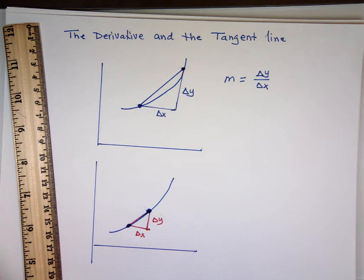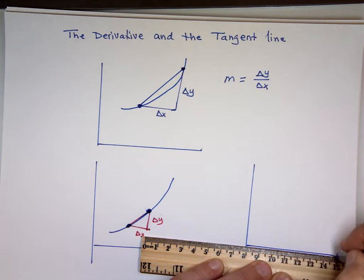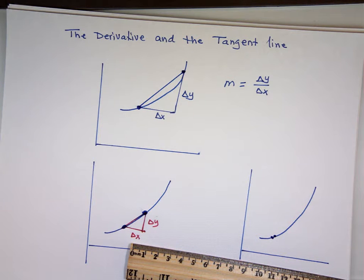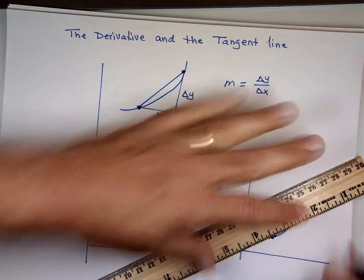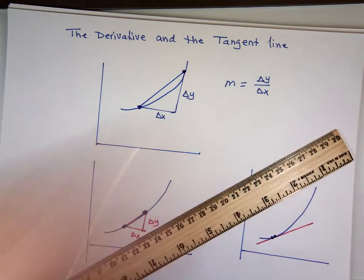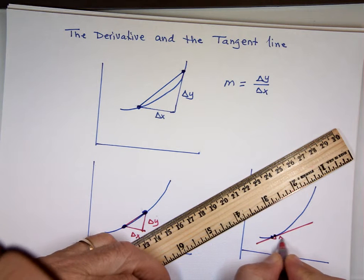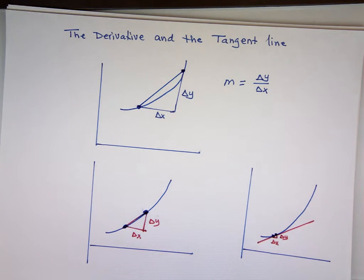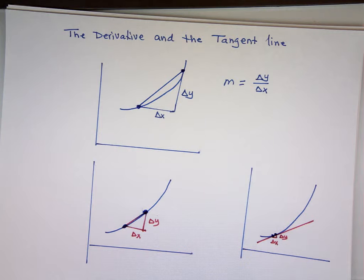One more time — let me make the points even closer, pick this point and the one right next to it. When you connect two points that are right next to each other, you get a tiny rise over run, delta y over delta x. That red line is really the tangent line — a line that touches the graph at one point. So if the two points are very close to each other, you have the tangent line.